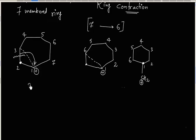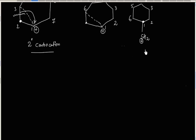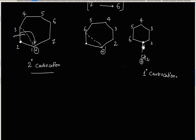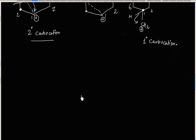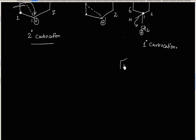So we are going from a 2° carbocation to a 1° carbocation. This carbocation can further rearrange by a hydride shift. After the hydride shift, finally we will have a 3° carbocation.